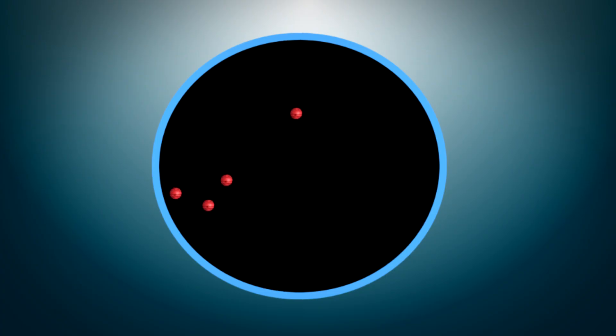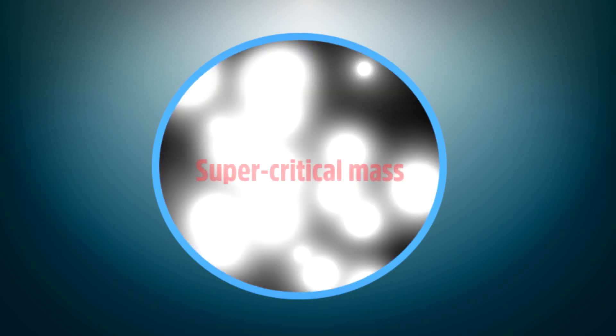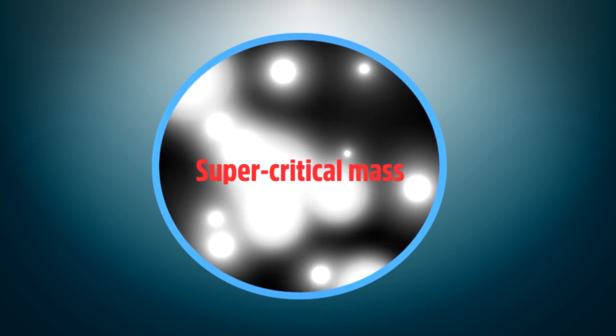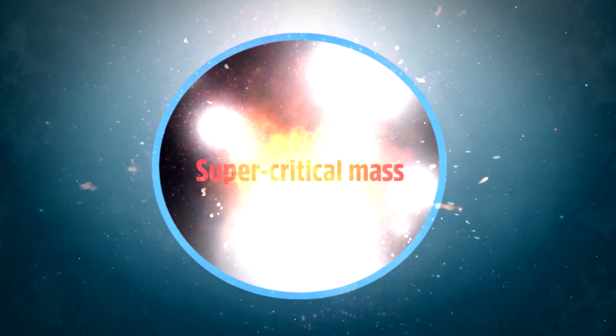Then the correct amount of fissionable material has to be placed inside this vessel. This is called a supercritical mass. There has to be enough mass to sustain an uncontrollable chain reaction resulting in an explosion.